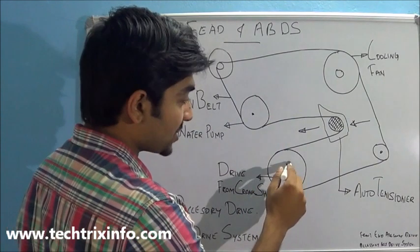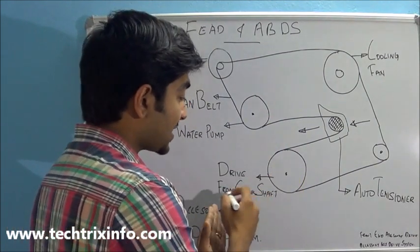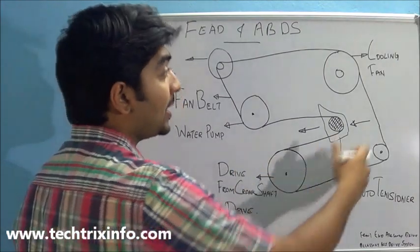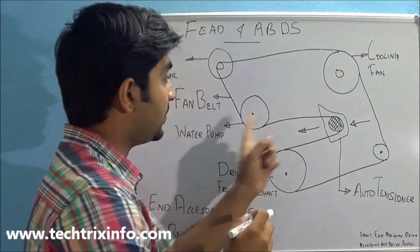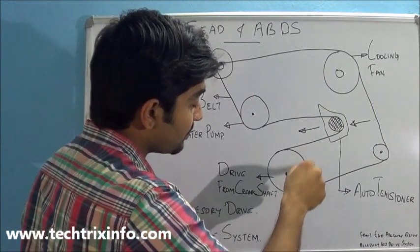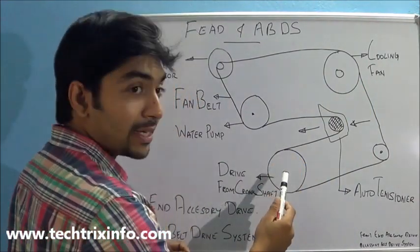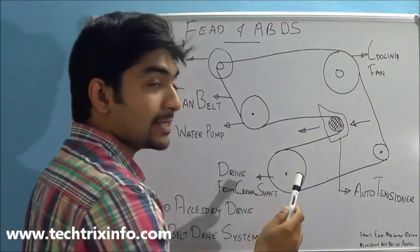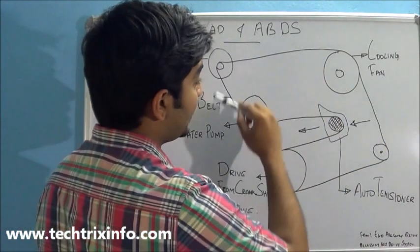And this is the crankshaft pulley which is actually providing the drive towards all these accessories. Here we have the cooling fan. So the drive from the crankshaft is being supplied towards all these accessories through this fan belt.